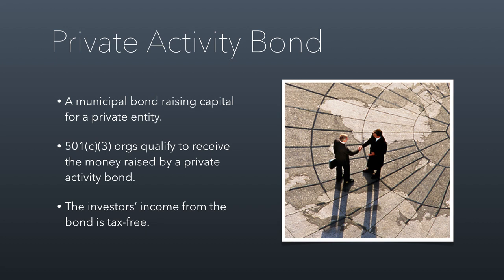Private activity bonds are different because it's not the nonprofit borrowing the money — it's actually a municipality that borrows it. This happens when a city decides it needs some program activity in the community but doesn't want to run it, and would rather it be run by an independent nonprofit. For example, a city might want a health clinic or rec center without being in charge of running it. The city borrows the money through a bond, taxpayers repay the bond through the city over time, and the proceeds are granted to a nonprofit that carries out the activity. It must be a 501(c)(3) organization for a private activity bond to qualify. Like other municipal bonds, the investor's income from the bond is tax-free.